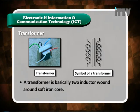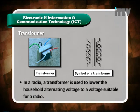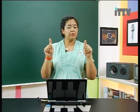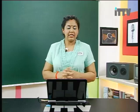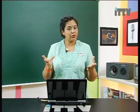Here is a picture of a transformer and the symbol of a transformer. In a radio, a transformer is used to lower the household alternating voltage to a voltage suitable for the radio. The transformer uses a soft iron core to change the alternating current from the outside supply and converts it to a suitable voltage for the radio. So the transformer lowers the voltage and changes the alternating current to direct current for the radio.